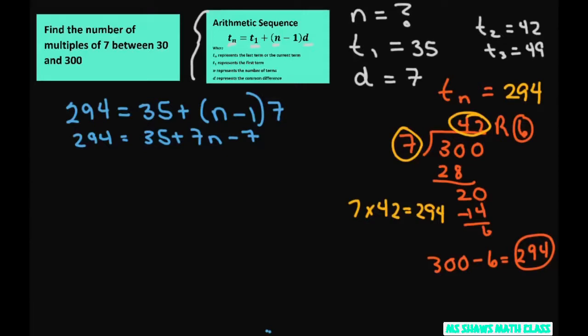Alright, so this is going to end up giving you 7N equals 266, so N equals 38. And that's your final answer.